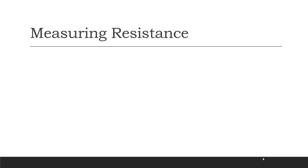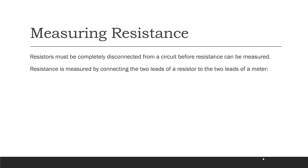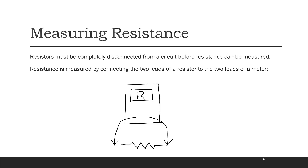Now let's talk about measuring resistance. In order to measure the resistance of a component, the resistor must be completely disconnected from the circuit before resistance can be measured. To make the resistance measurement, you connect the two leads of a resistor to the two leads of a meter. In practice, you have a resistor and a meter, and you connect the two ends of the resistor to the two leads of the meter.